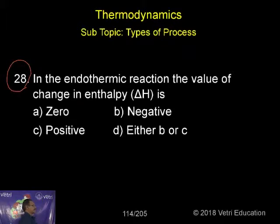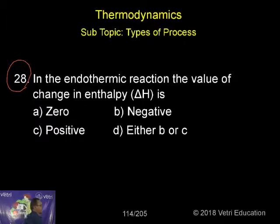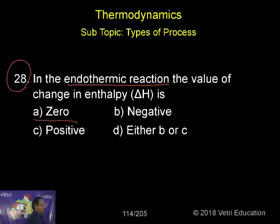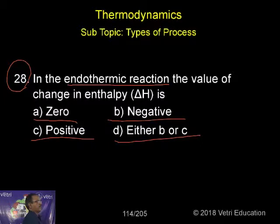Question number 28. In the endothermic reaction, the value obtained in enthalpy is: A) zero, B) negative, C) positive, or D) either B or C.